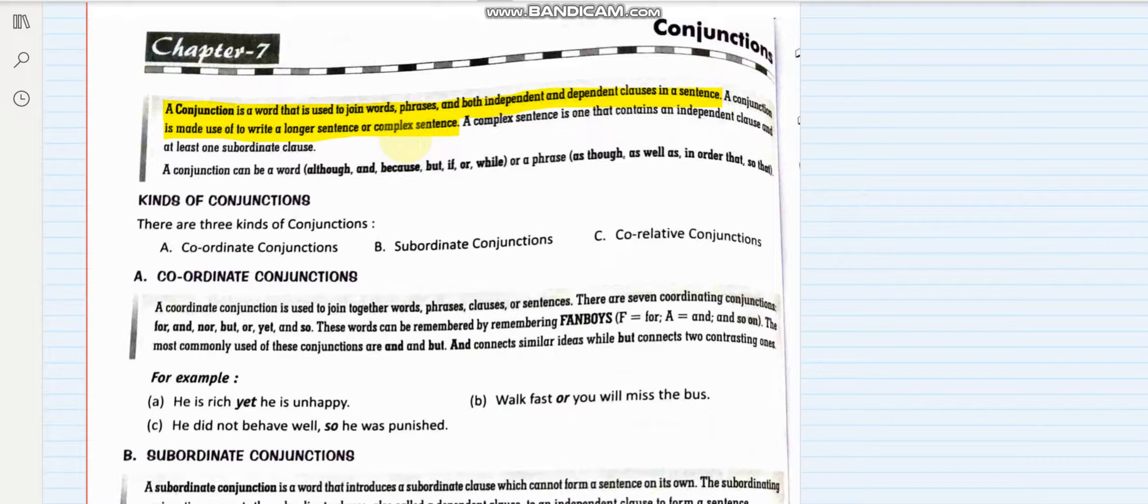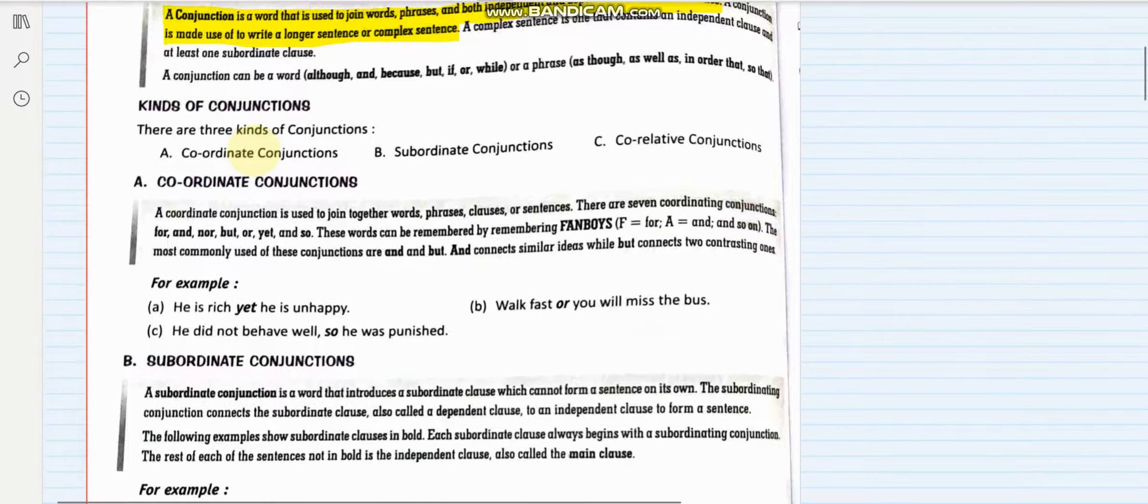Obviously when we are joining two phrases or two sentences using a word known as conjunction, it becomes a complex sentence. We will read the second part later on. First let us understand the kinds of conjunctions.